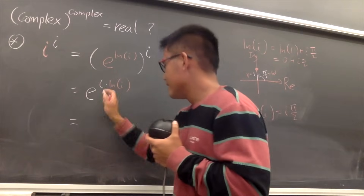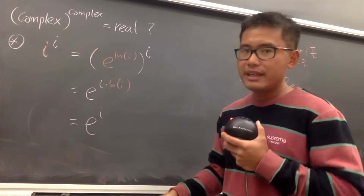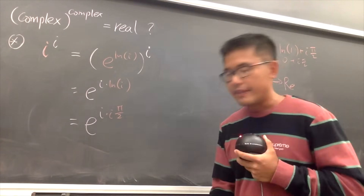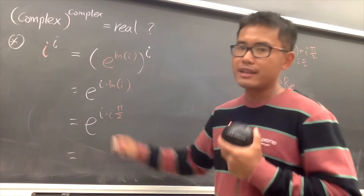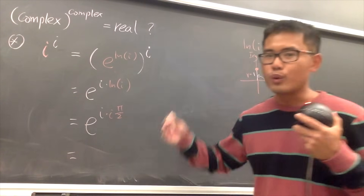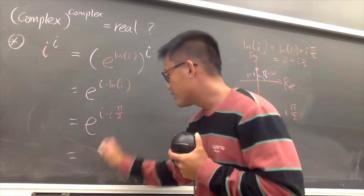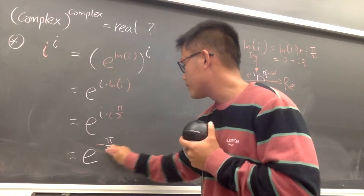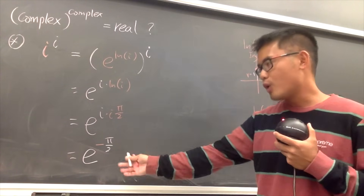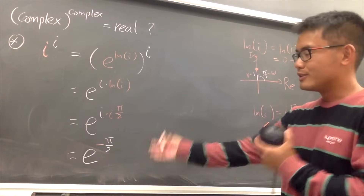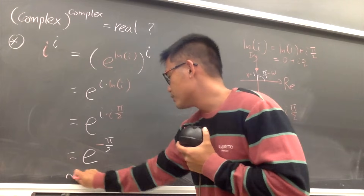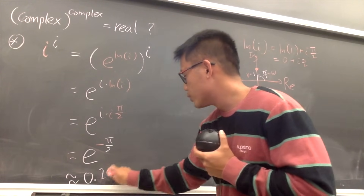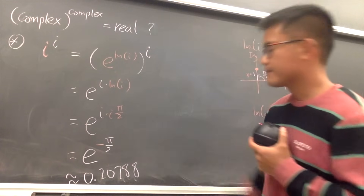Going back to our expression: e to the i times ln i, we substitute ln i equals i times pi over 2. So we have e to the i times i pi over 2. Now i times i is i squared, which is negative 1. So this is e to the negative pi over 2. No more i — this is a real number! Using a calculator, this is approximately 0.20788...